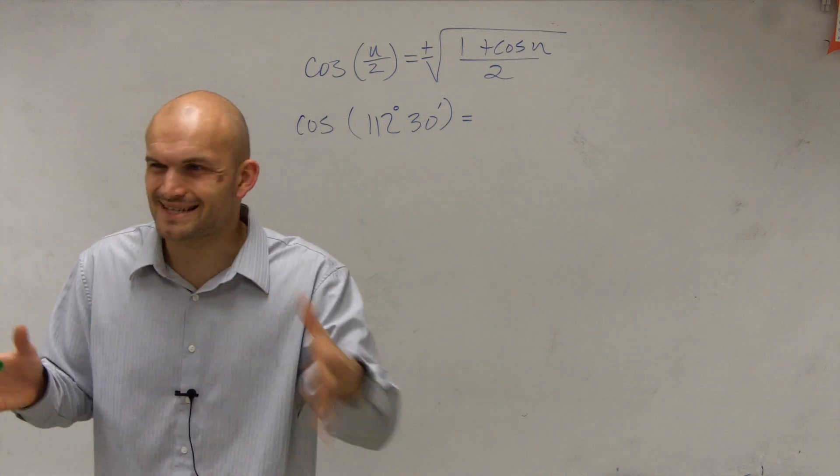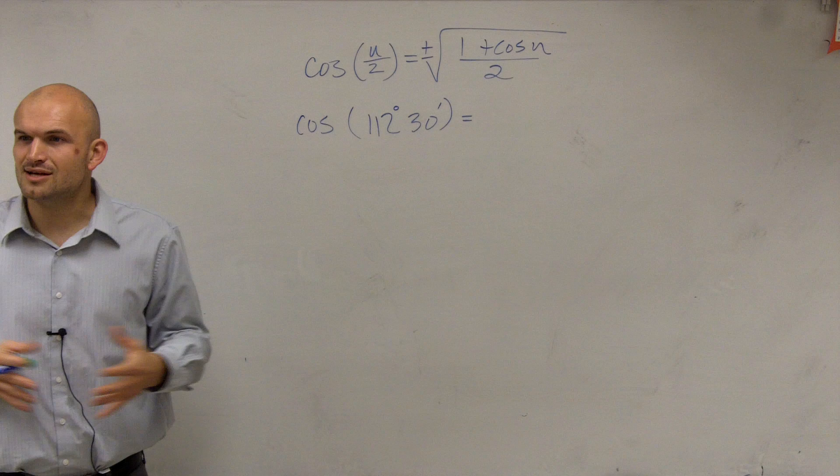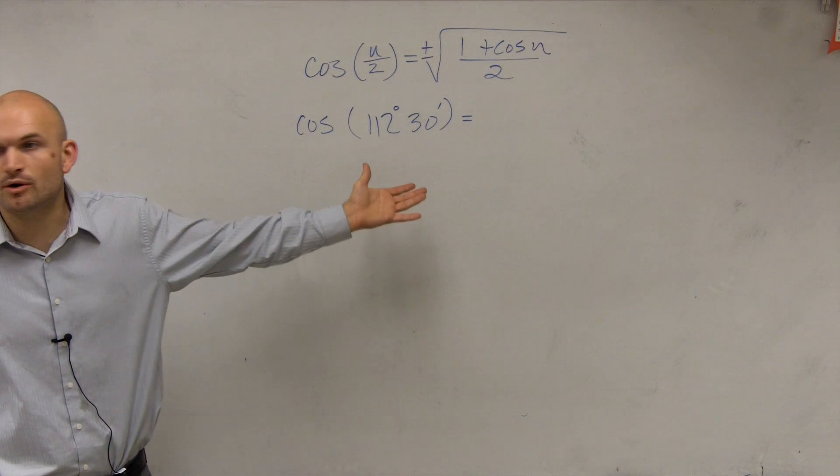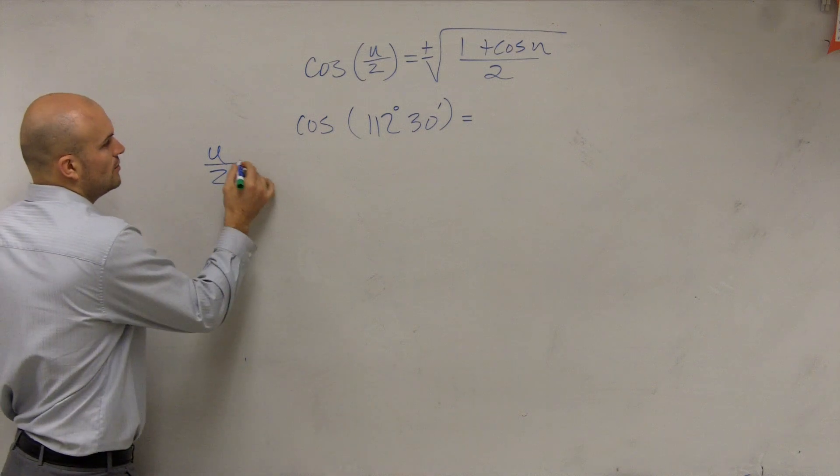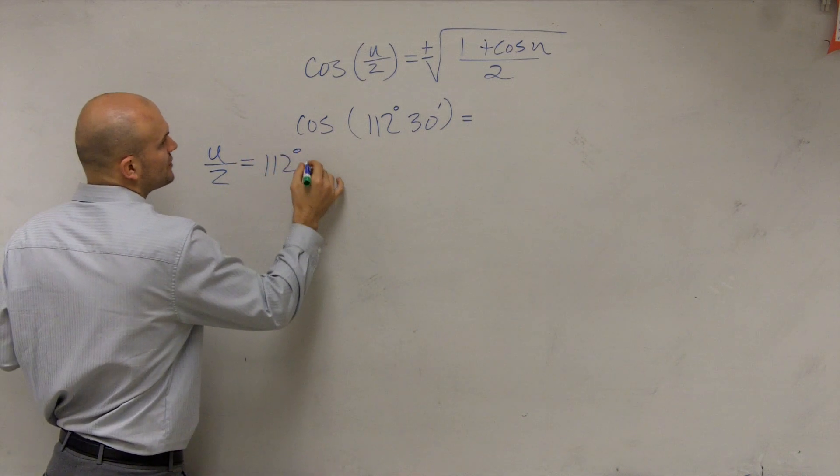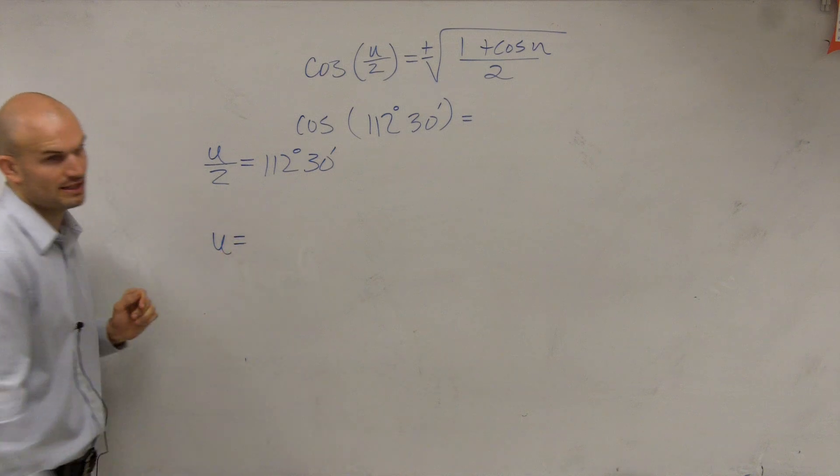Because now, remember, 30 minutes, we're getting into decimals or partial parts of degrees. So what we can look at this is, well, what if I doubled this? What would I get? So if we said u divided by 2 is equal to 112 degrees and 30 minutes, what is u going to be equal to?